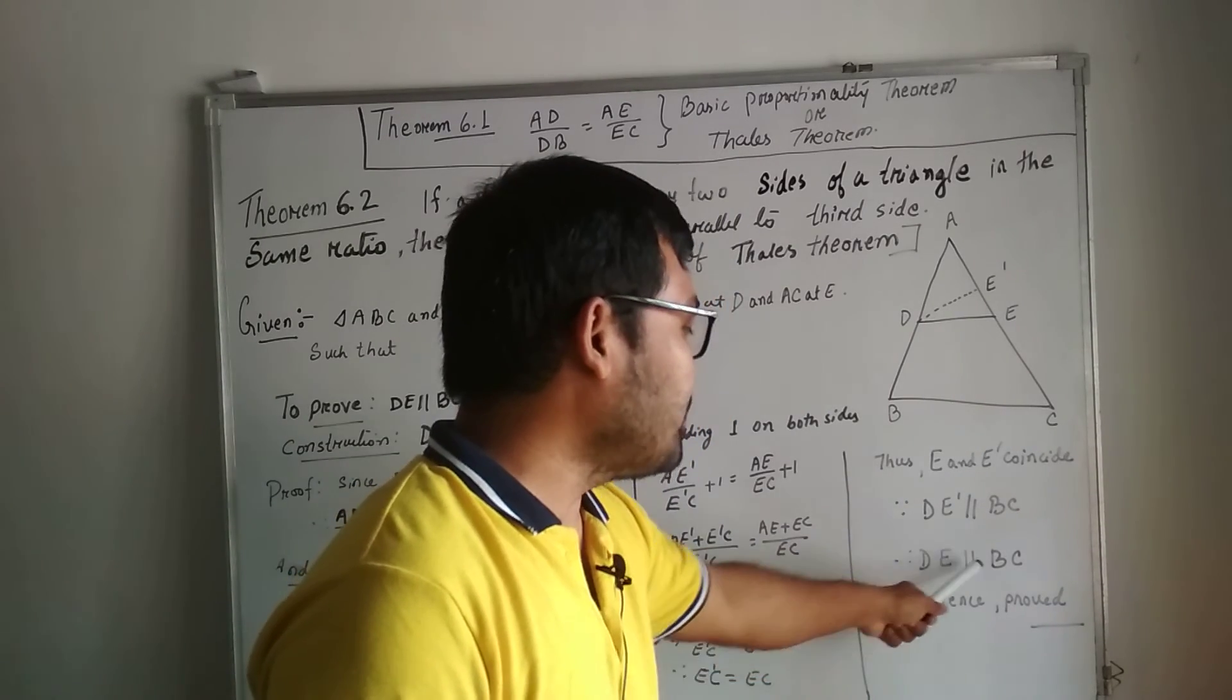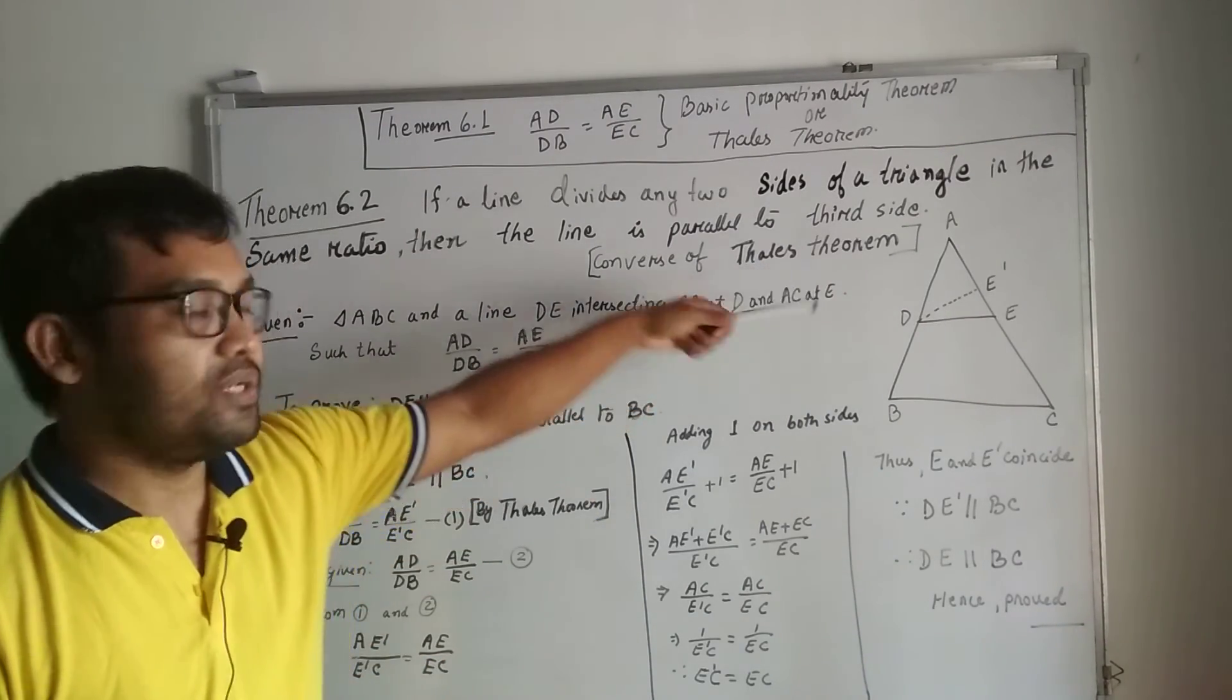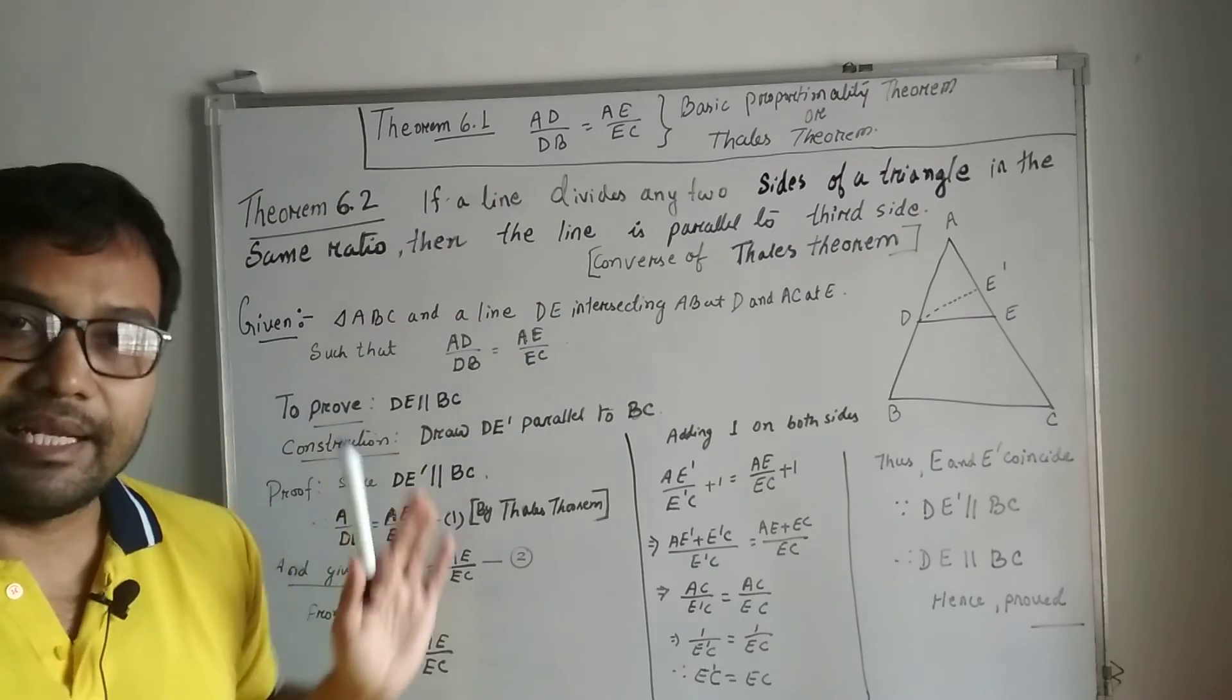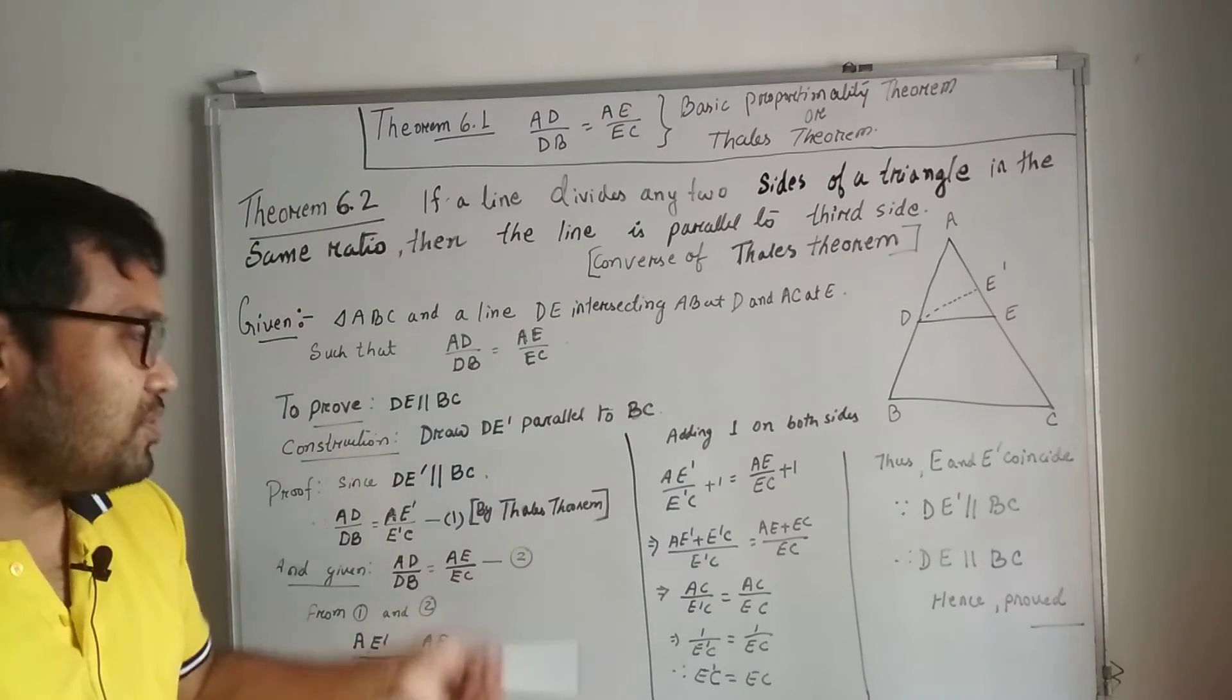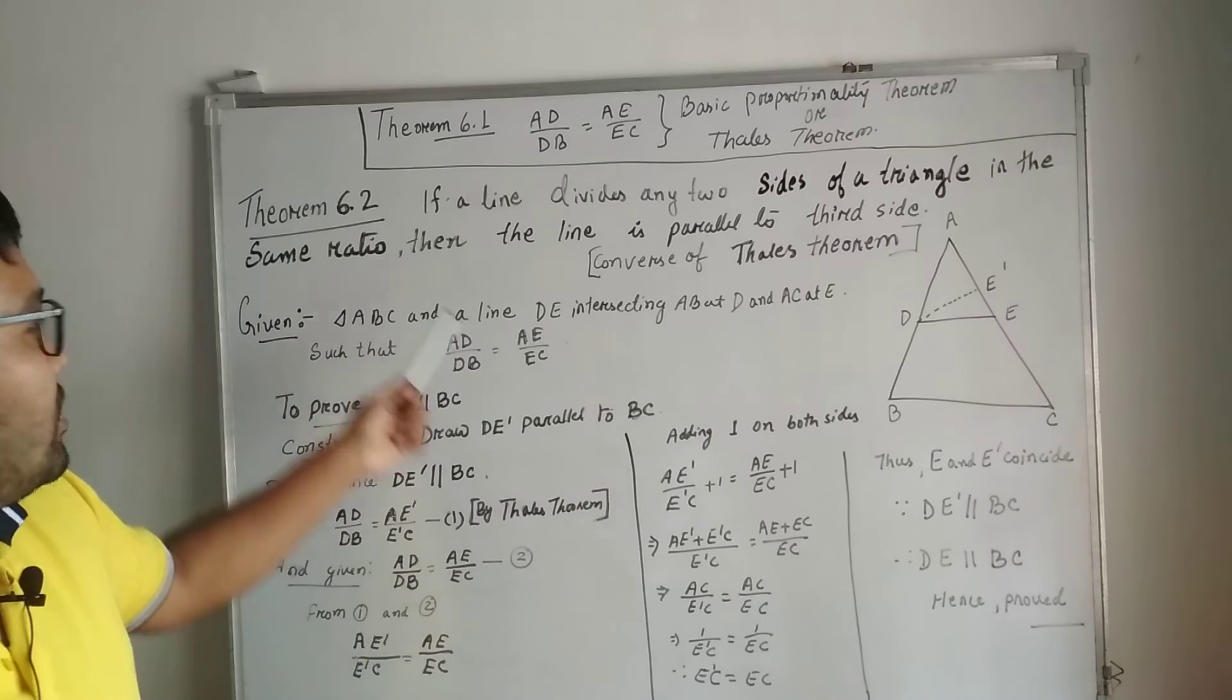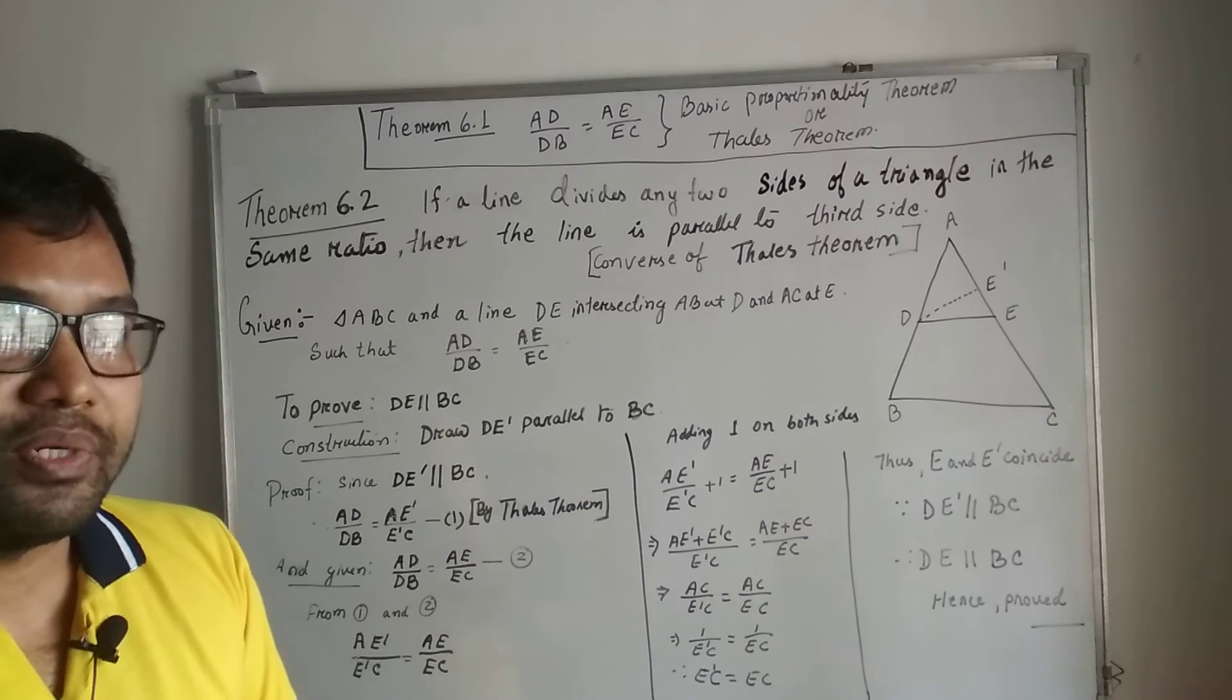This theorem that we are discussing now is called converse of Thales theorem. The first theorem is basic proportionality theorem or Thales theorem; the second is converse of Thales theorem. I hope everyone is clear with it. Please go through the proof that we have given here. I would request you to write all these solutions from this video itself because in the textbook it's not completely proved properly. Thank you.